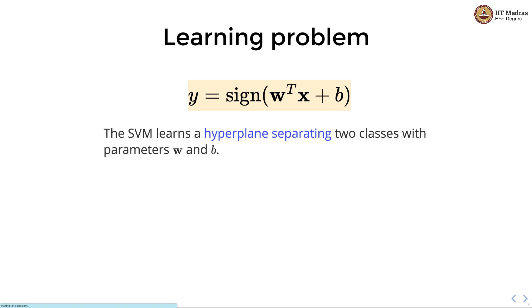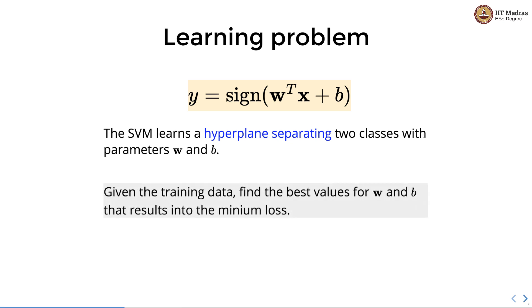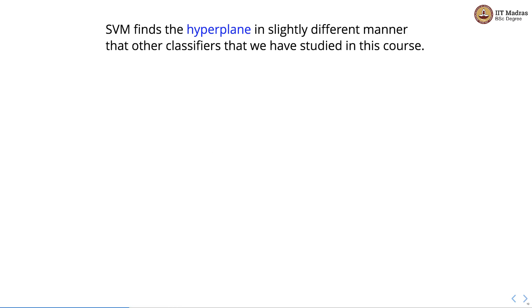What is the learning problem in SVM? The learning problem is to determine the parameters, which are the weight vector and the bias. SVM in general learns a hyperplane separating two classes. Given the training data, we need to find the best values of w and b that result in the minimum loss. SVM finds the hyperplane in a slightly different manner than other classifiers we have studied so far.